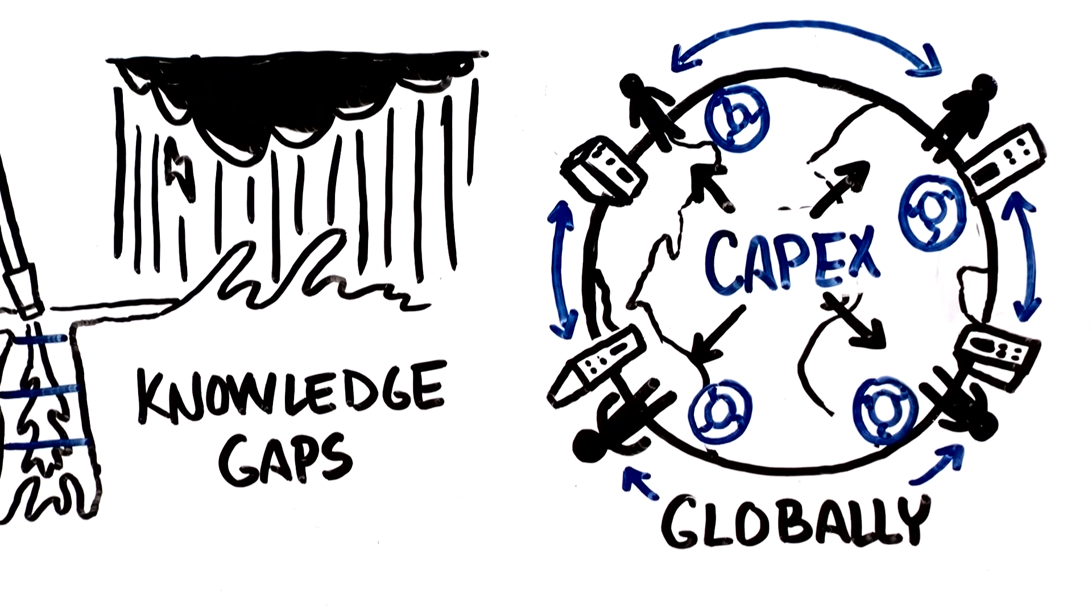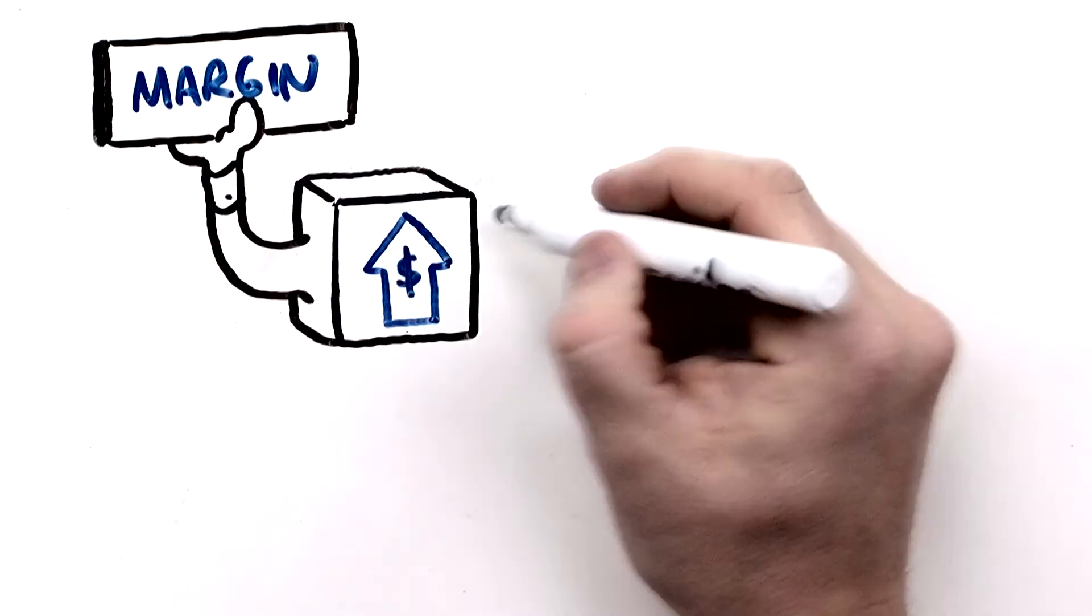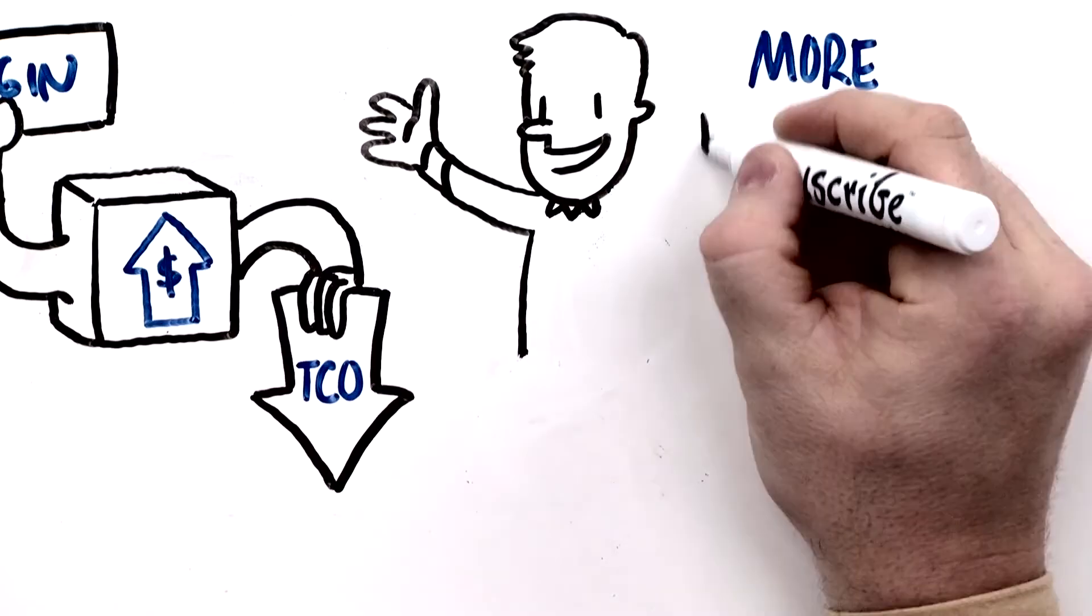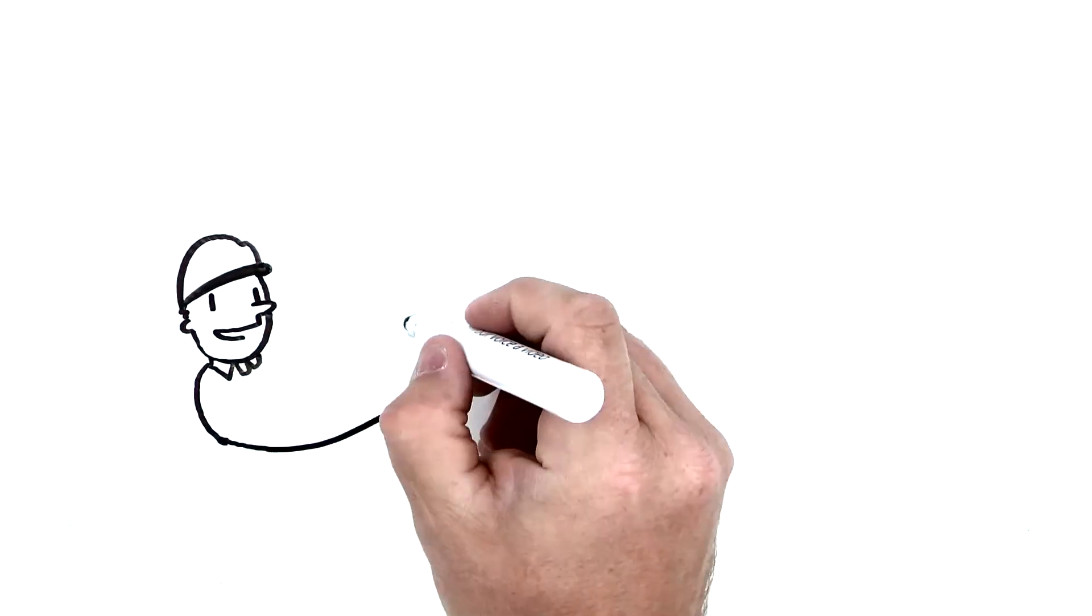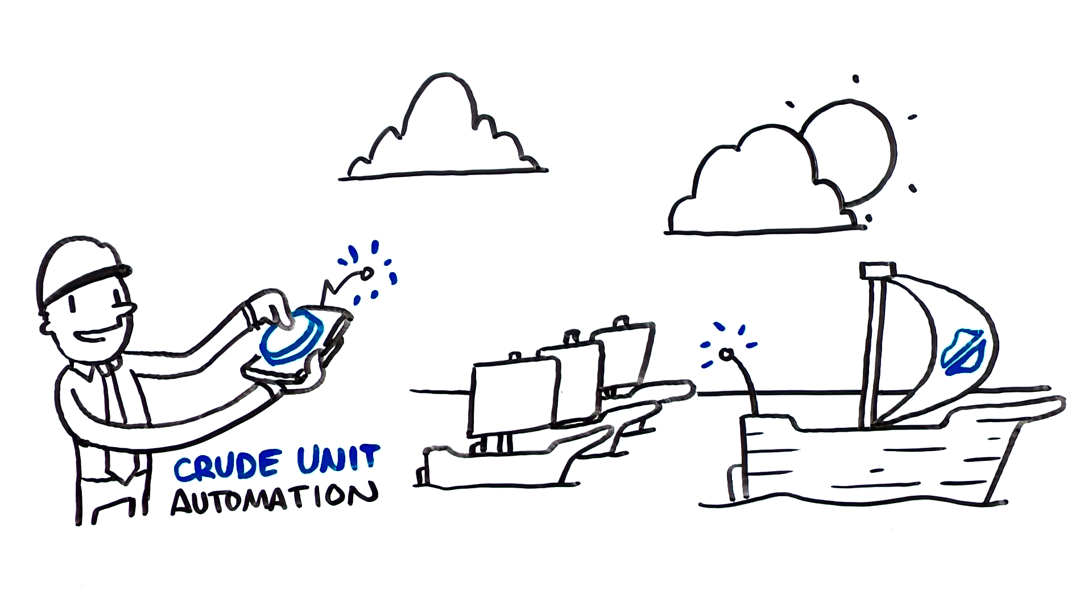We get you to reduced TCO and higher operating margins. Whether value generation projects are designed to deliver margin improvement or reduce total costs of operation, the customer benefits from a more efficient and real-time process. Working with NALCO on crude unit automation, industry leaders are staying ahead of their competitors.